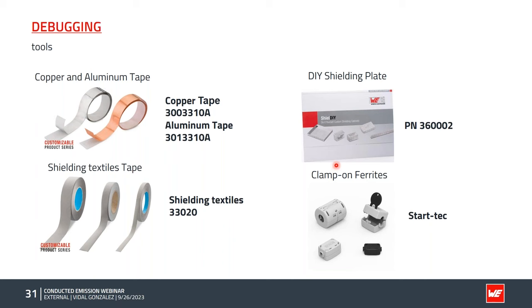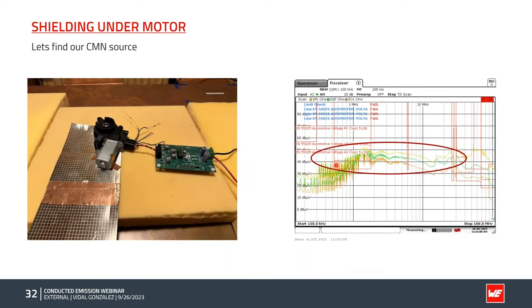What we will need for debugging is copper tape, aluminum tape, and shielding textiles. These will help us shield and isolate parts of the board or system. We'll also use DIY shielding in place, which allows us to shape different shields to isolate certain parts of the board. It is also handy to have a kit of different clamp-on ferrites to help reduce common-mode noise — for the purpose of this experiment, clamp-on ferrites were not really needed. Let's talk about how we can isolate our system.